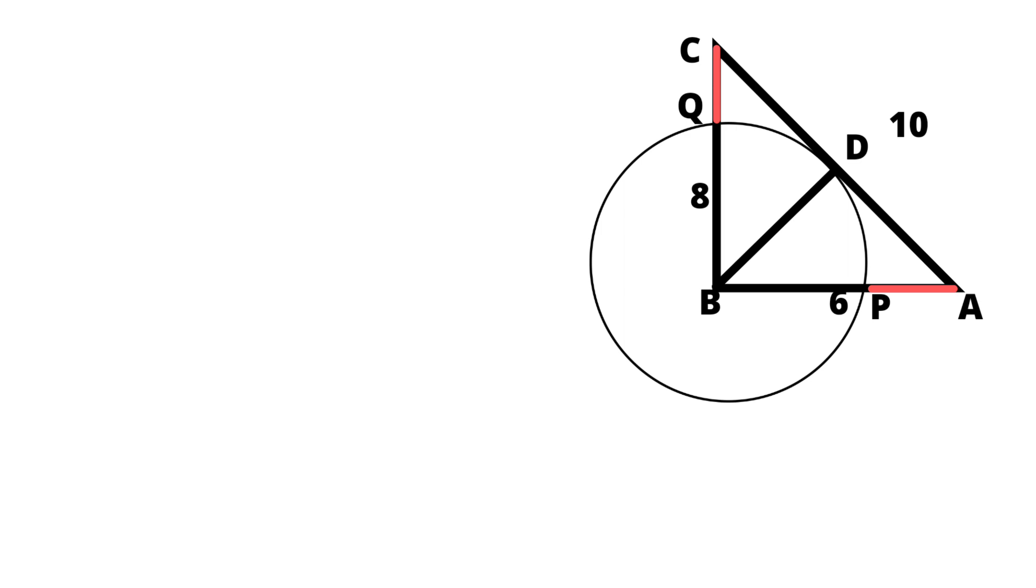We know that the area of triangle ABC is equals half into base into height. Let's try to find out the area of triangle ABC. Here we can find out the area of triangle in two ways.